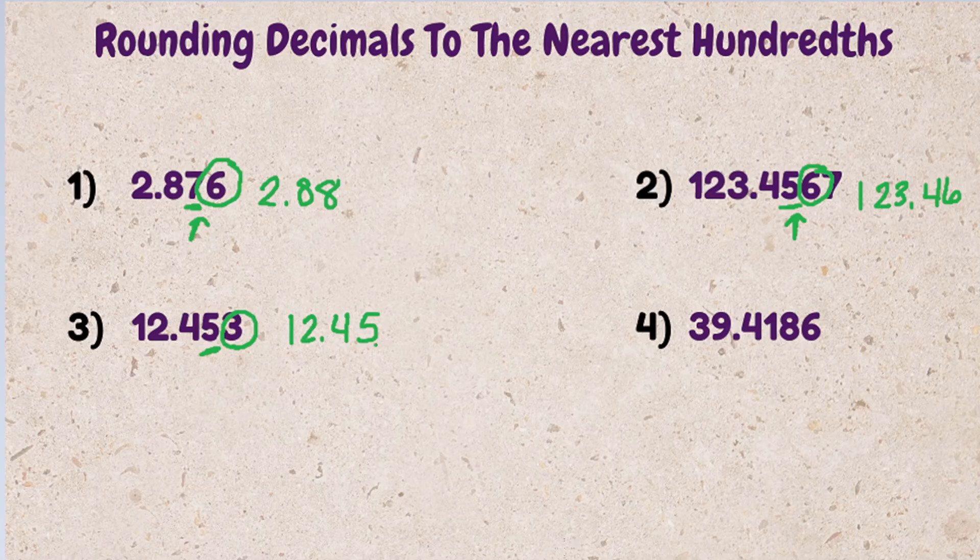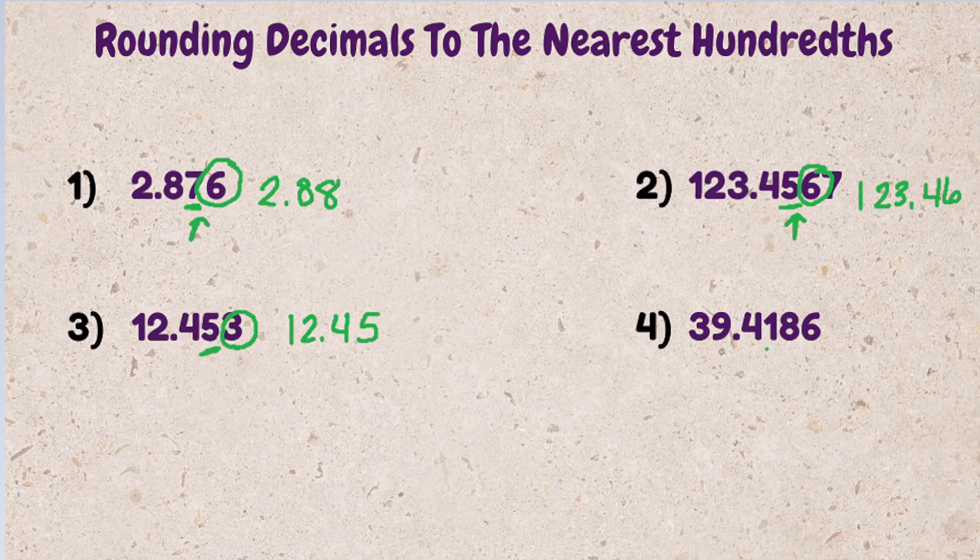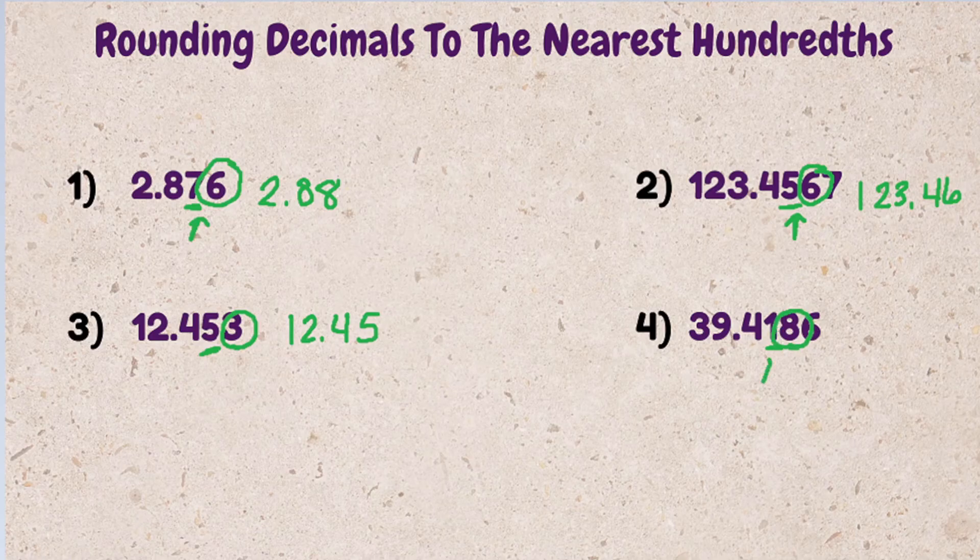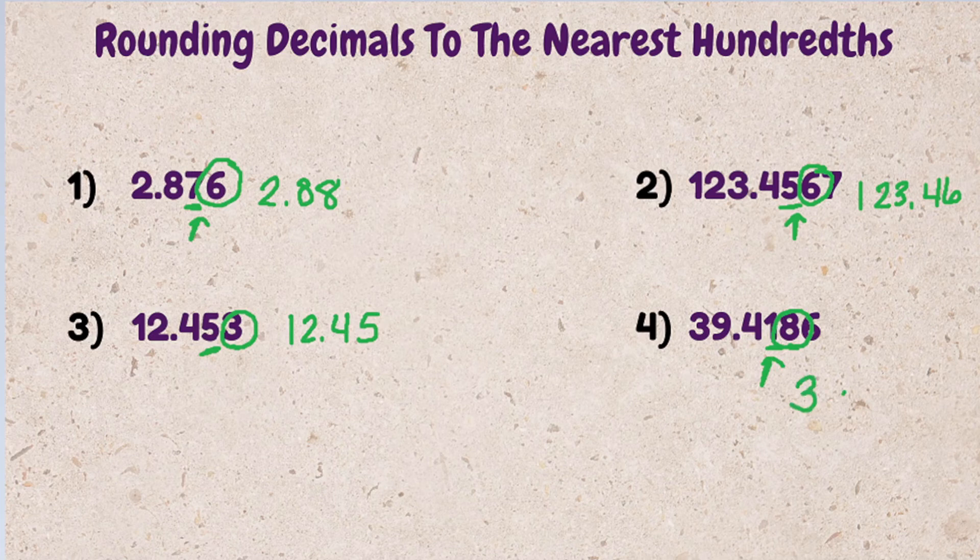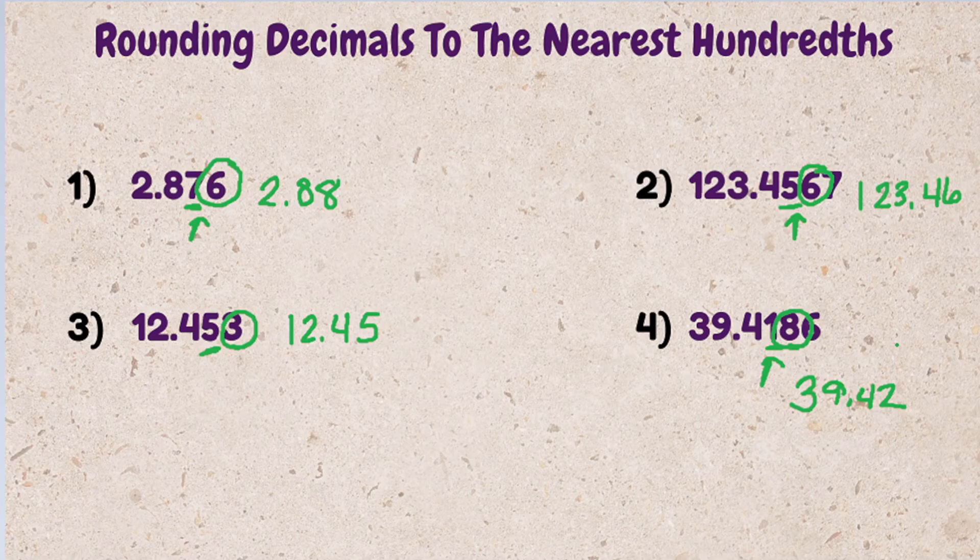Last example, 39.4186. The number in the hundredth spot is going to be one. The digit to the right is eight, which means we're going to round up. 39.42 is 39.4186 rounded to the nearest hundredth.